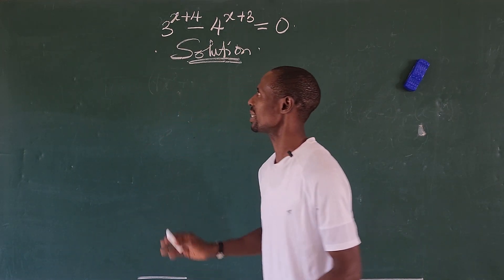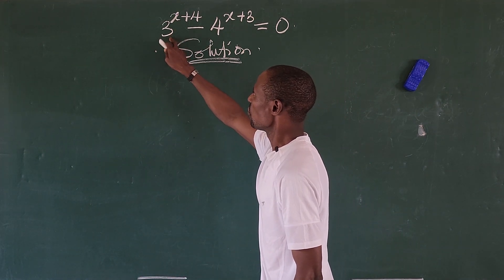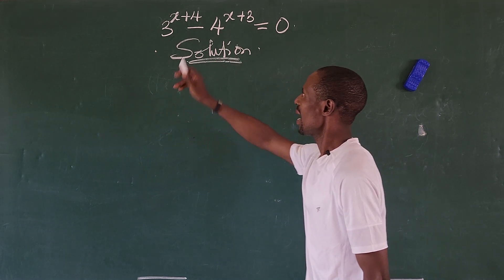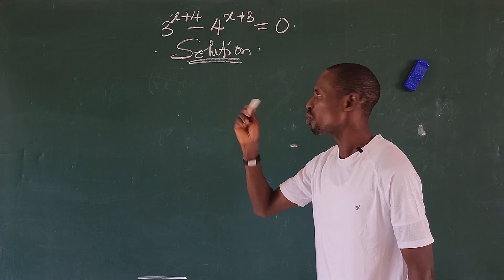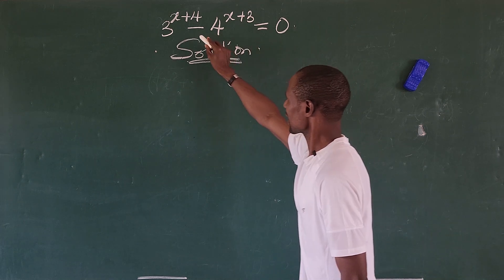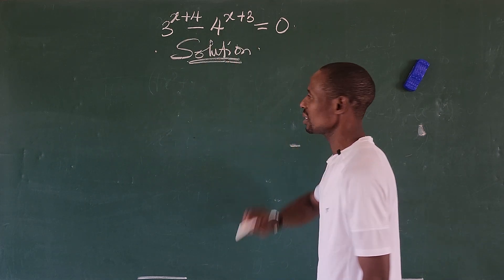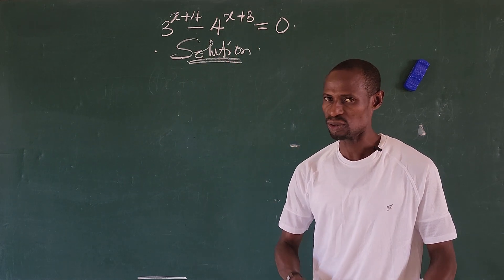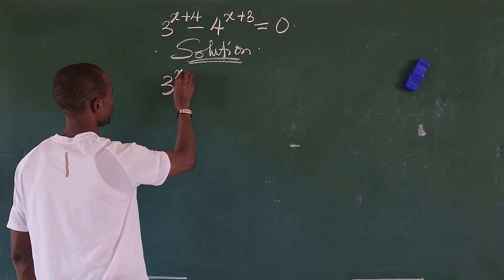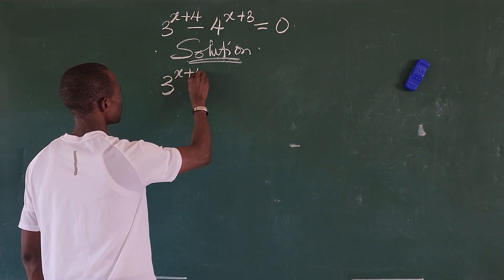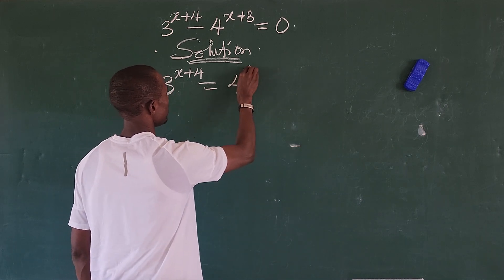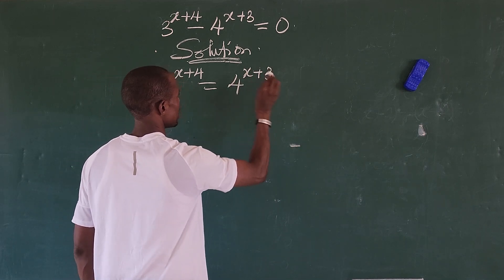Now, the first thing we're going to do here is this: the base numbers are different and the powers are different. So what we do is move the quantity carrying a minus sign to the right-hand side of the equation to give us a positive. This gives us 3 to the power of x plus 4, equal to 4 to the power of x plus 3.